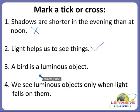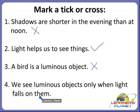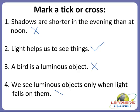A bird is a luminous object. Does a bird give out light of its own? No — it is not a luminous object. A bird does not give light of its own. So this is a wrong sentence. Last one: we see luminous objects only when light falls on them. Is it correct? No — it is a wrong sentence, because we see non-luminous objects when light falls on them.